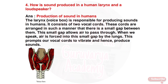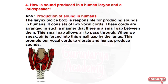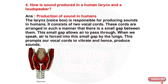The larynx, or voice box, is responsible for producing sounds in humans. The larynx consists of two vocal cords arranged such that there is a small gap between them. This small gap allows air to pass through. When we speak, air is forced into this small gap by the lungs, causing the vocal cords to vibrate and produce sound.